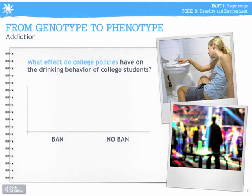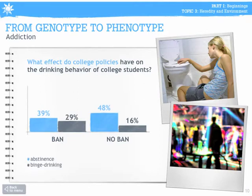No one should be blamed or punished for inherited problems, but ignoring nature-nurture interaction can lead to serious problems. If you know that alcoholism runs in your family, you may be more likely to say no to having extra alcohol or being put in that position. Knowing the importance of the environment can lead to action whenever a genetic vulnerability is apparent.